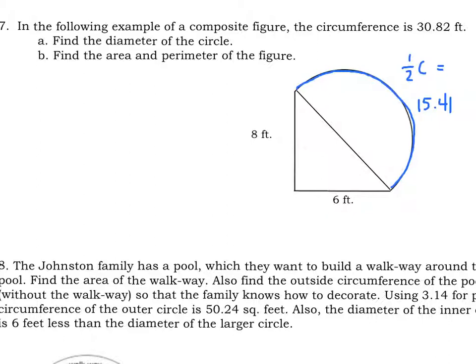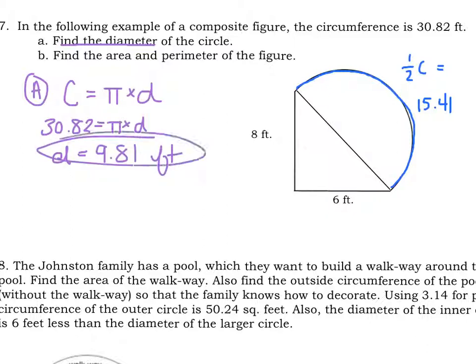Part A says, find the diameter of the circle. Remember, if we're only having circumference, we know circumference is pi times diameter. So, 30.82 equals pi times d. If we solve for d, we end up with d equals 9.81 feet. And there we have part A.